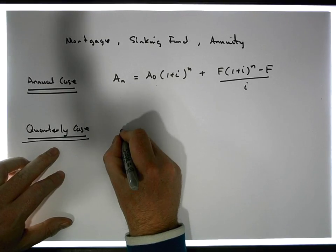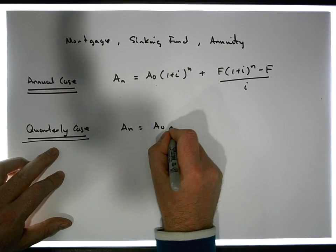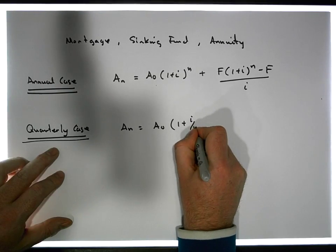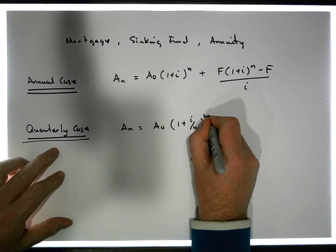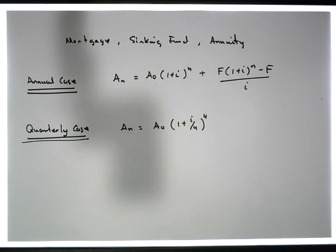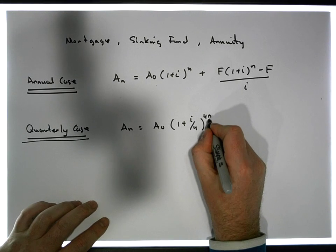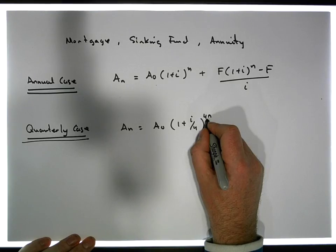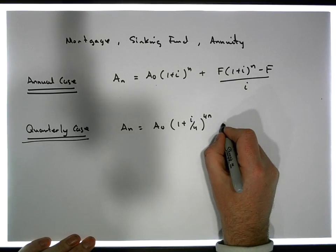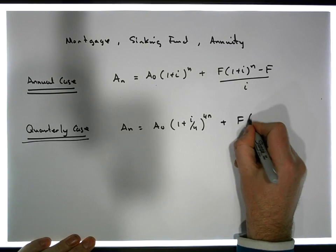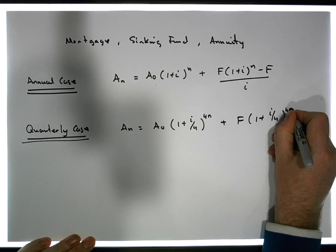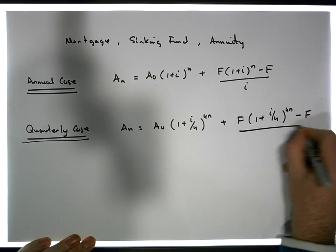So we have A n must be equal to A zero times one plus i over four raised to the power of four, let's say it's four n, because there's going to be four times the number of compounds each year, and say over n years, plus F times one plus i over four raised to the power of four n minus F all over i divided by four.